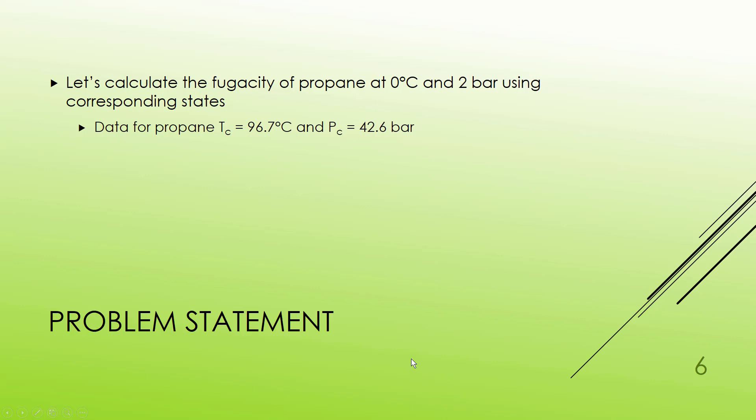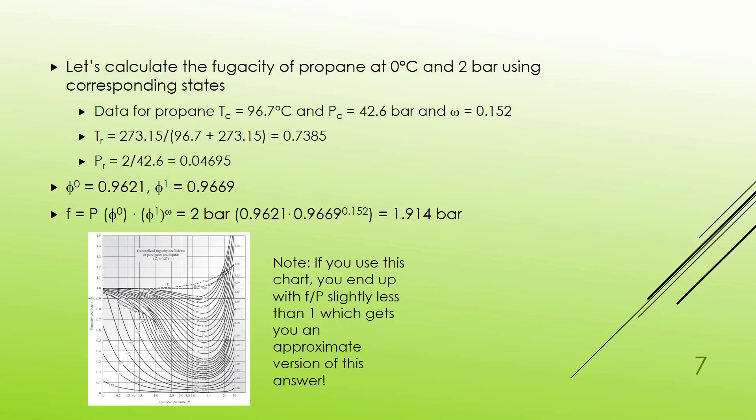I also did this using corresponding states. So for this I'm going to need critical data. So TC is 96.7, well below our temperature, and the critical pressure is 42.6, far way over our pressure. So if we look at this, I'm going to need to calculate the reduced temperature and pressure.